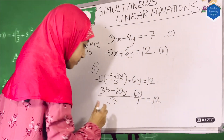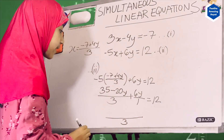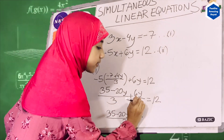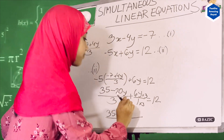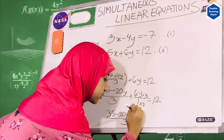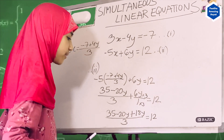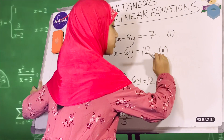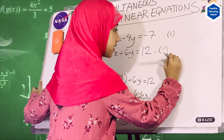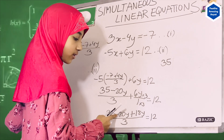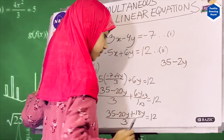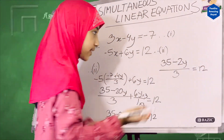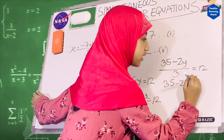Now we can find the LCM, which is 3. So 35 minus 20y remains, and 6y is multiplied by 3 to give plus 18y, equals 12. Writing it out: minus and plus is minus, and since the greater number is minus, we get 35 minus 2y, divided by 3, equals 12. Multiplying both sides by 3, we get 35 minus 2y equals 36.